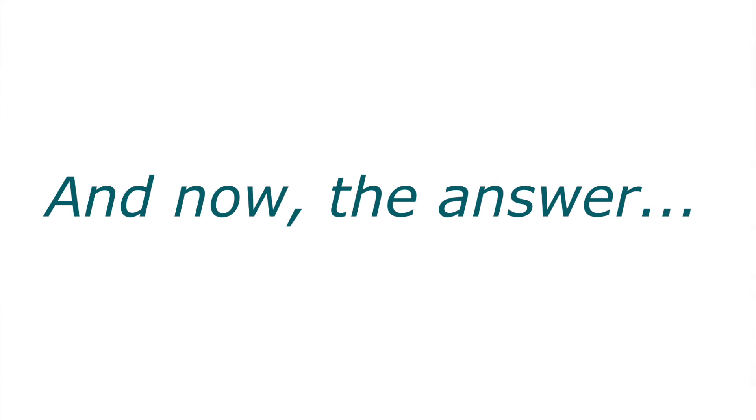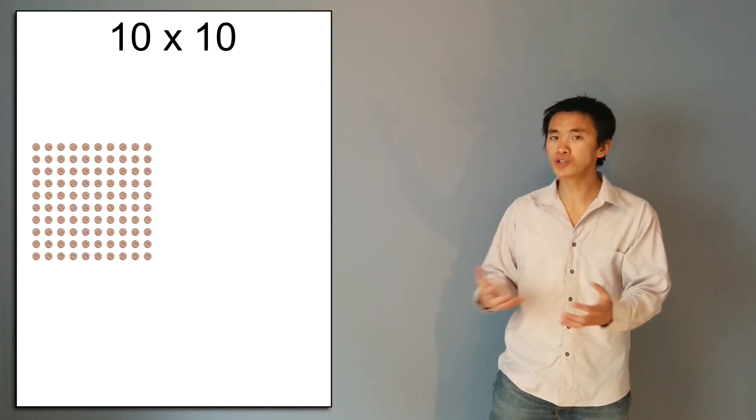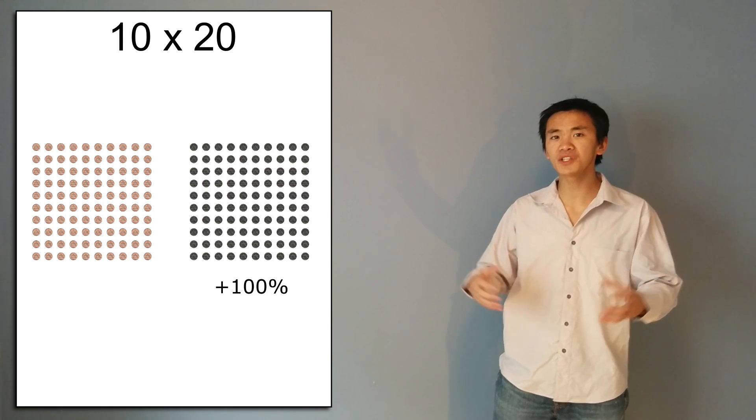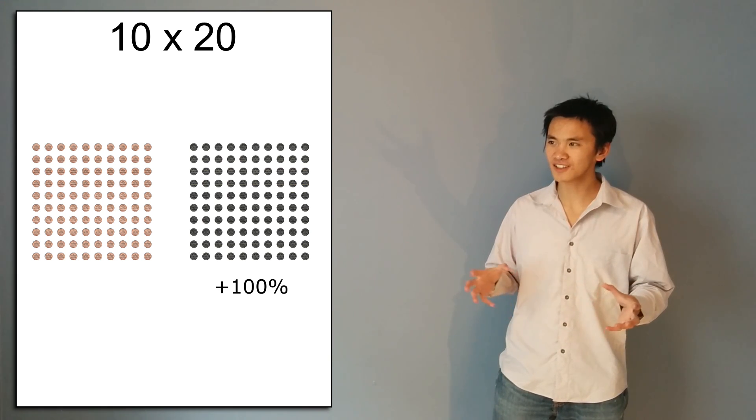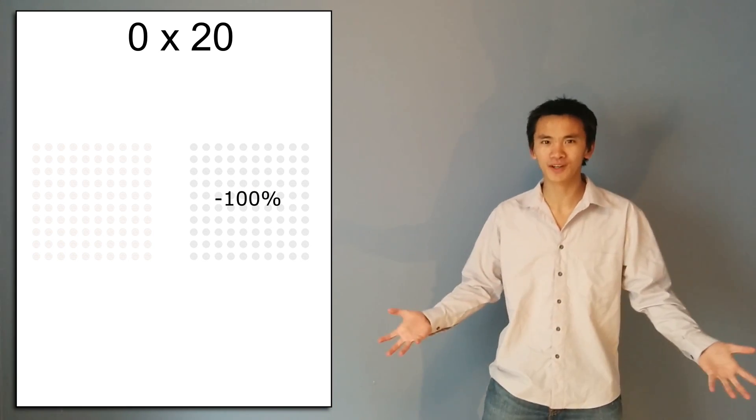To understand what's going on here, what we can do is to act like physicists — study what happens at extreme values. Let's consider a 100% increase followed by a 100% decrease. I would move from 100 coins to 200, and then a 100% decrease of 200 coins gives me 0.